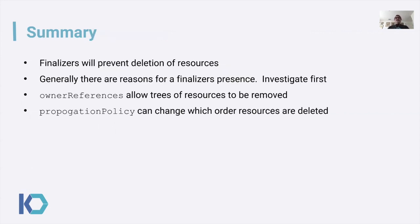Thus concludes the presentation. Takeaways: finalizers can get in the way of the deletion of resources, especially when there are trees of owner references. Generally there's a reason for a finalizer's presence — you should investigate first before manually deleting it. Owner references allow trees of resources to be specified and removed, and finalizers are honored in that process, so they can result in partial deletion of trees. Propagation policy can be specified in a custom API call to change the order in which resources are deleted. If you're in a situation where you do have a partial tree, you can control how those objects are deleted by specifying the propagation policy on the API call.